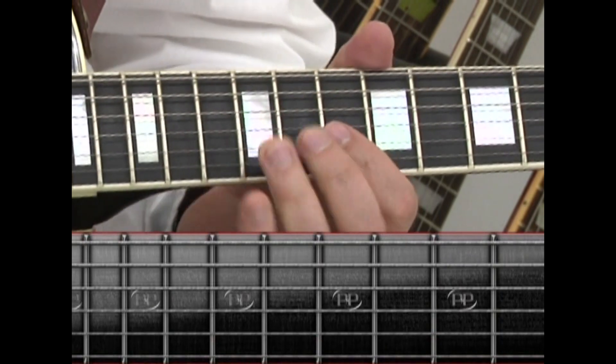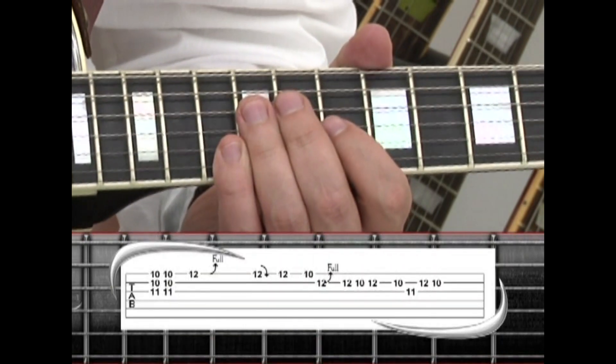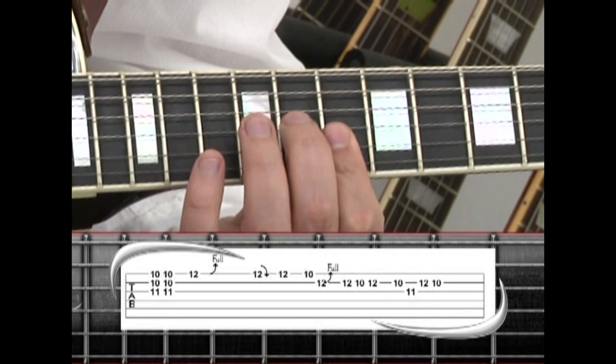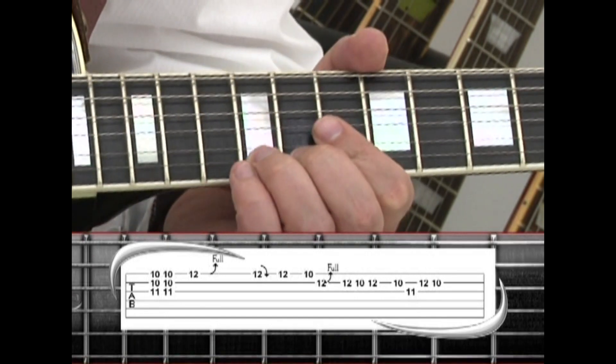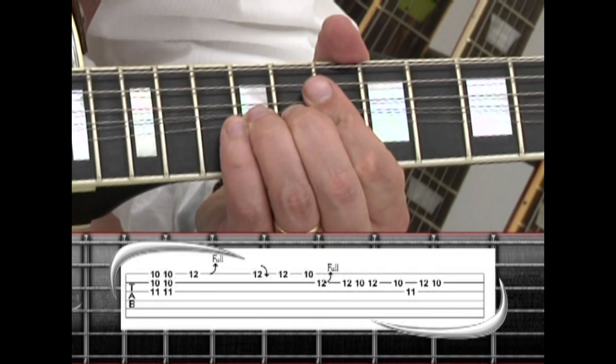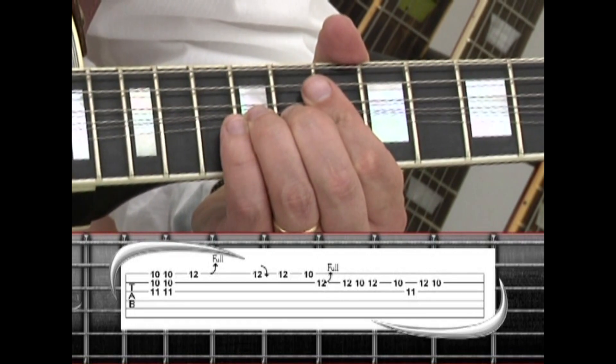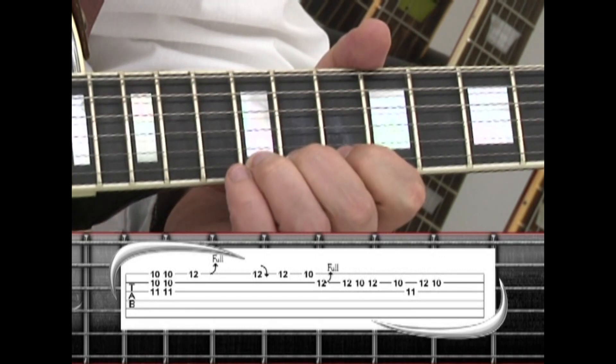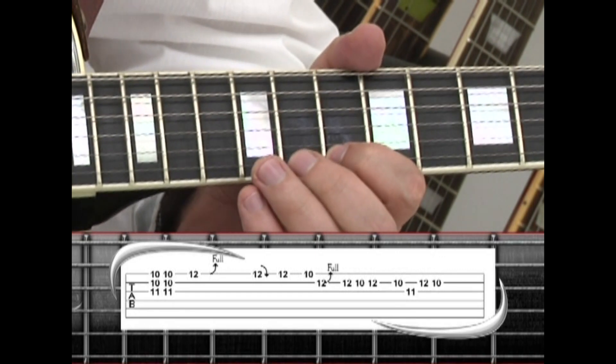To start the 3rd guitar solo, in phrase 16, we double up on the 10th fret D chord, then bend the 1st string 12, hold the bend, pick 12 and release the bend, 12 again to 10, to the 2nd string 12.